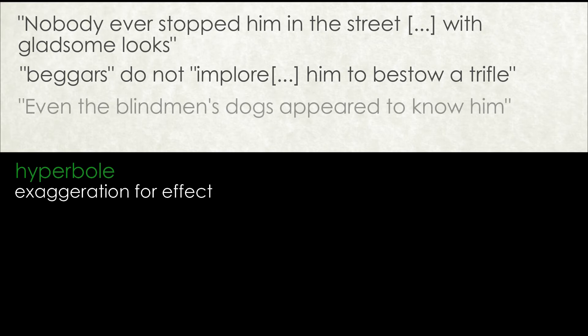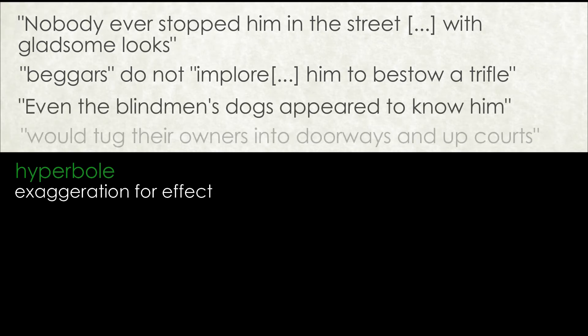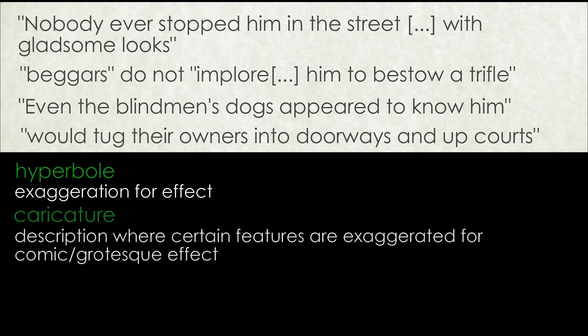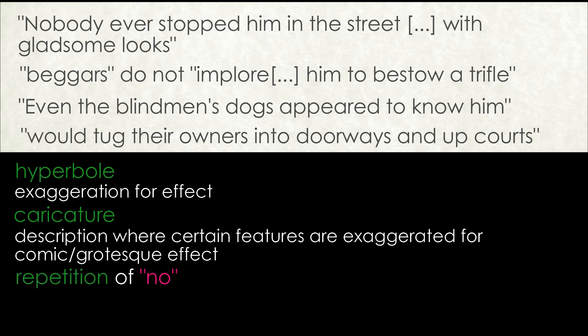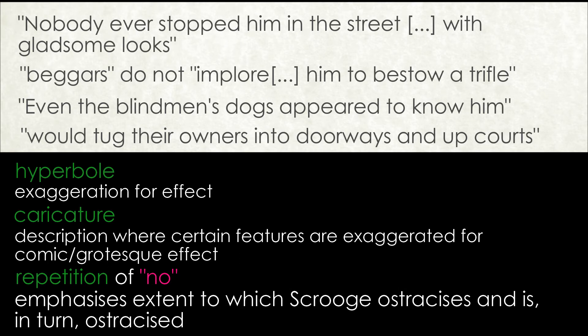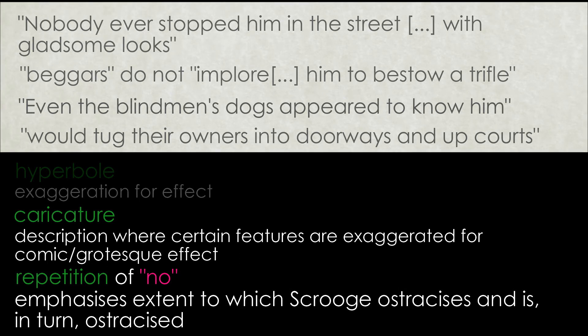Even the blind men's dogs appeared to know him. The way in which they would tug their owners into doorways and up courts to urge them to avoid him, even though blind men would be completely oblivious to his passing by, serves to create a caricature of a man, rather than a realistic human being, who is avoided by all. The first two paragraphs of the extract are dominated by the repetition of the word 'no,' which serves to emphasise the extent to which Scrooge ostracises, and is ostracised, in turn.